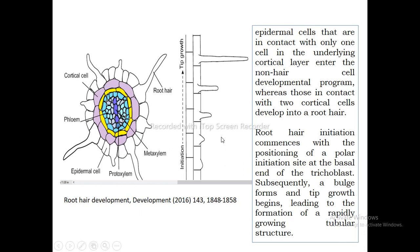Epidermal cells can be underlain by either one or two cortical cells. Cells underlain by only one cortical cell follow the developmental program of a normal hairless cell. Epidermal cells that are in contact with two underlying cortical cells will develop into root hair cells. So contact with one cortical cell gives a non-hair cell, and contact with two cortical cells leads to root hair development.